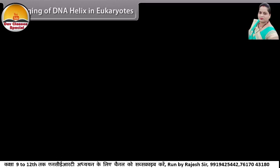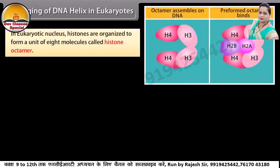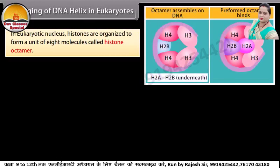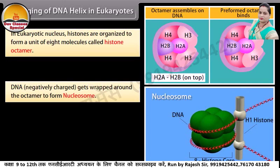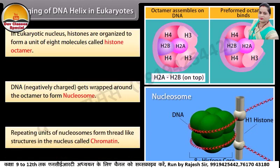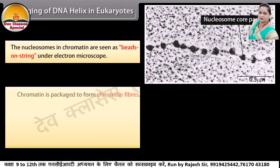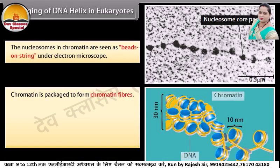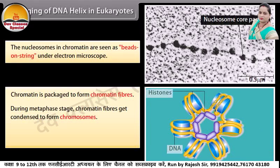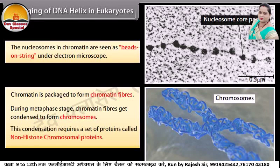Packaging of DNA helix in eukaryotes. In eukaryotic nucleus, histones are organized to form a unit of 8 molecules called histone octamer. DNA, being negatively charged, gets wrapped around the octamer to form a nucleosome. Repeating units of nucleosomes form thread-like structures in the nucleus called chromatin. The nucleosomes in chromatin are seen as beads on a string under the electron microscope. Chromatin is packaged to form chromatin fibers. During metaphase stage, chromatin fibers get condensed to form chromosomes. This condensation requires a set of proteins called non-histone chromosomal proteins.